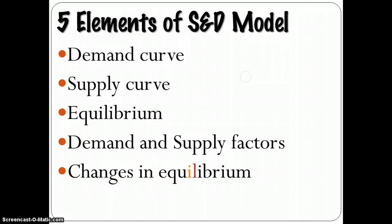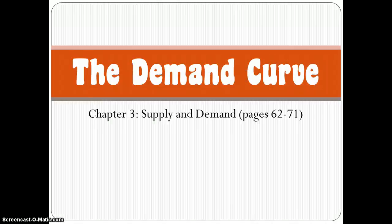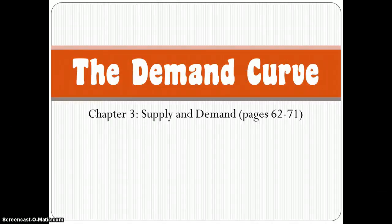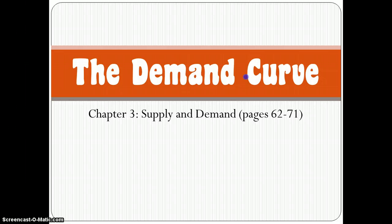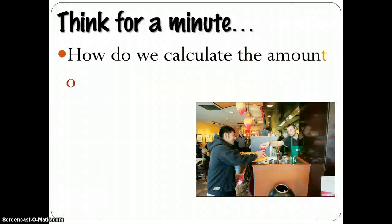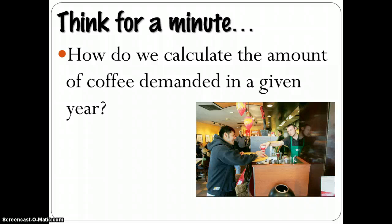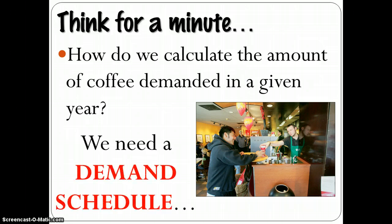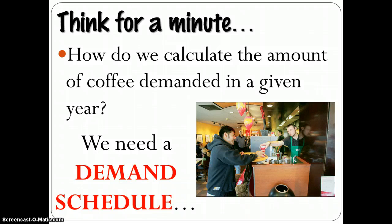But the first thing we want to look at is the demand curve, and that's pages 62 to 71. Now, the demand curve helps us calculate how much of some good people want. So we could say, how could we calculate the amount of coffee demanded in a given year? Well, we could ask people. And we could create what's known as a demand schedule that tells us how much coffee is demanded by people at given prices.